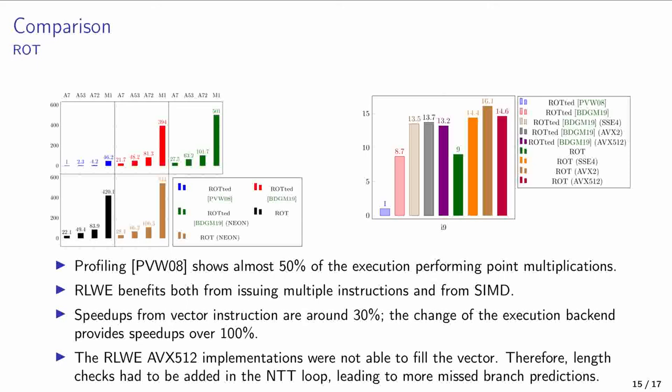An interesting case is the AVX2 implementation, which is faster than the AVX512 implementation. Indeed, the RLWE AVX512 implementations were not able to fill the vector. Therefore, length checks had to be added in the NTT loop, leading to more missed branch predictions.